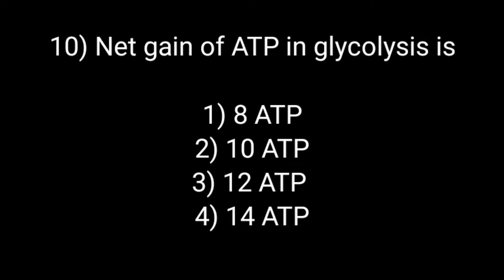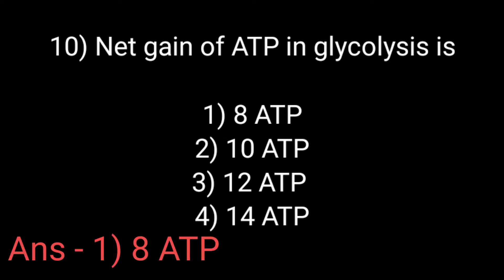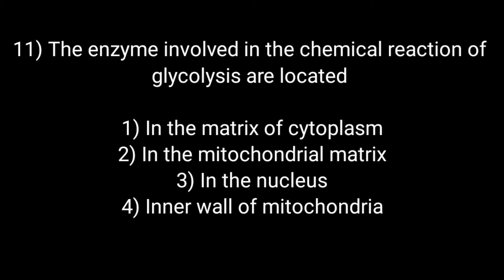Net gain of ATP in glycolysis is: Option first: 8 ATP. Option second: 10 ATP. Option third: 12 ATP. And option fourth: 14 ATP. The correct answer is option first: 8 ATP.